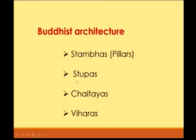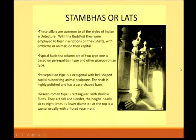To understand Buddhist architecture, we look at four main features: Stambas (pillars), Stupas, Chaityas, and Viharas. A stamba is also called a pillar. Pillars are a very common feature in all styles of Indian architecture, and similarly Buddhist architecture also features stambas.